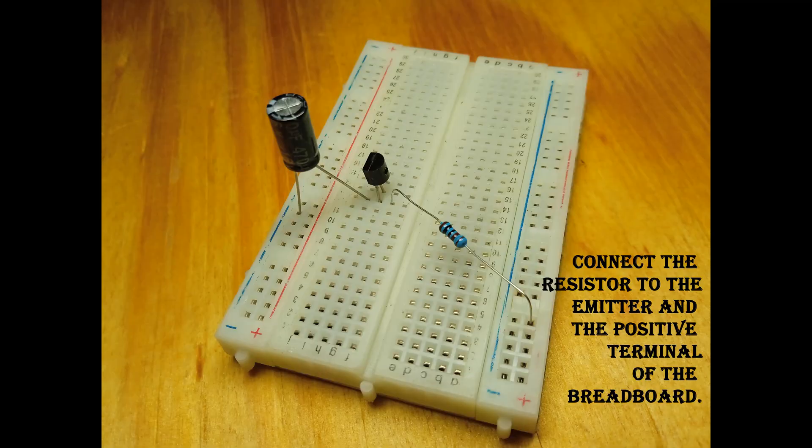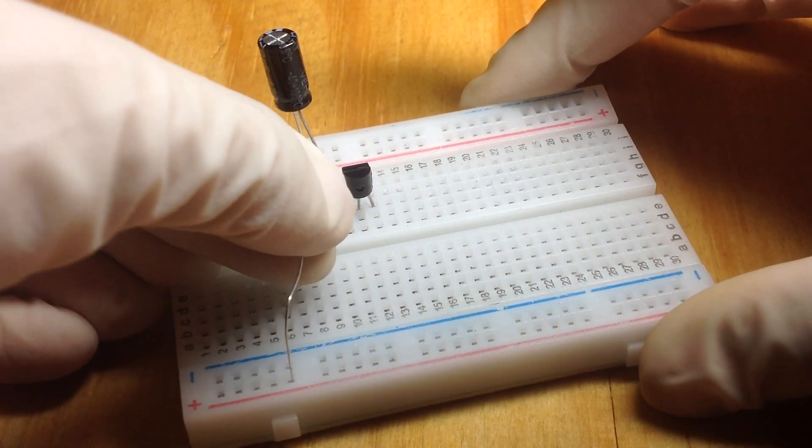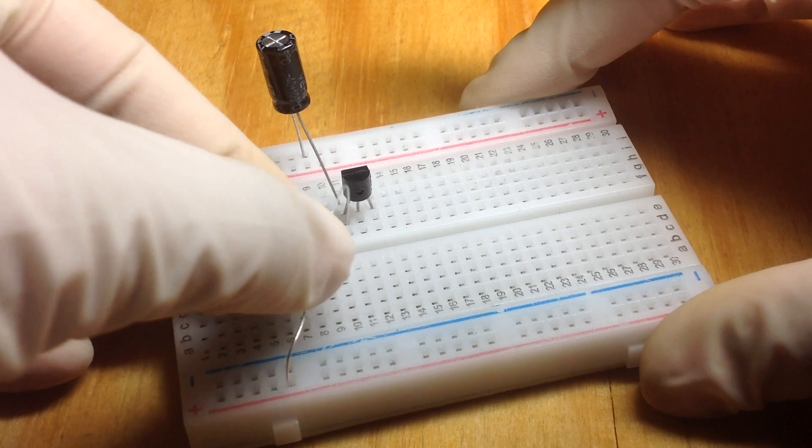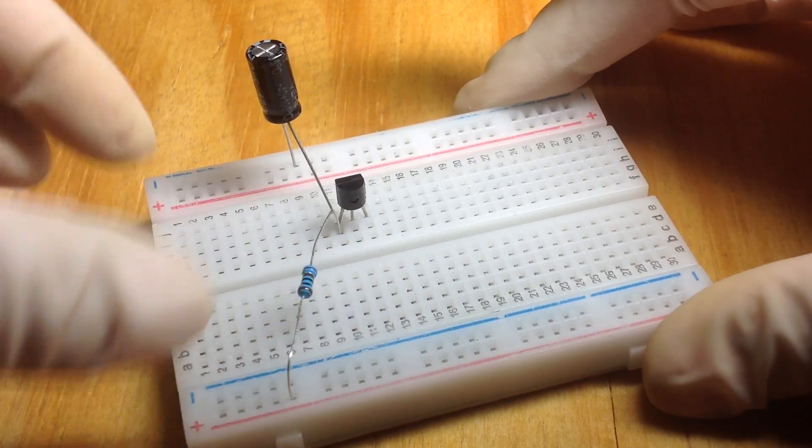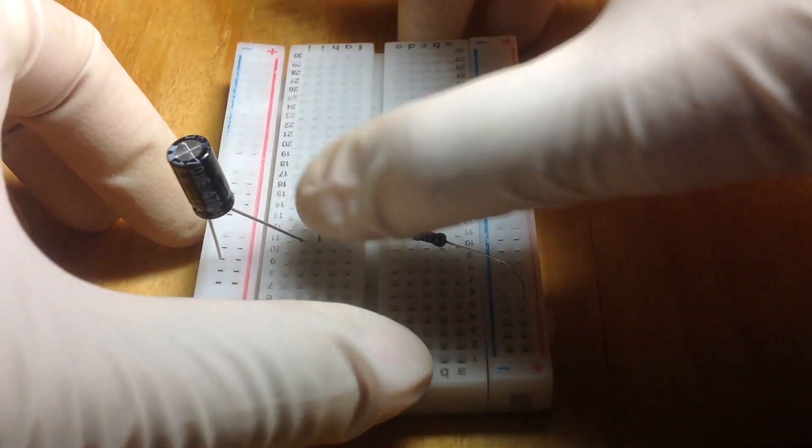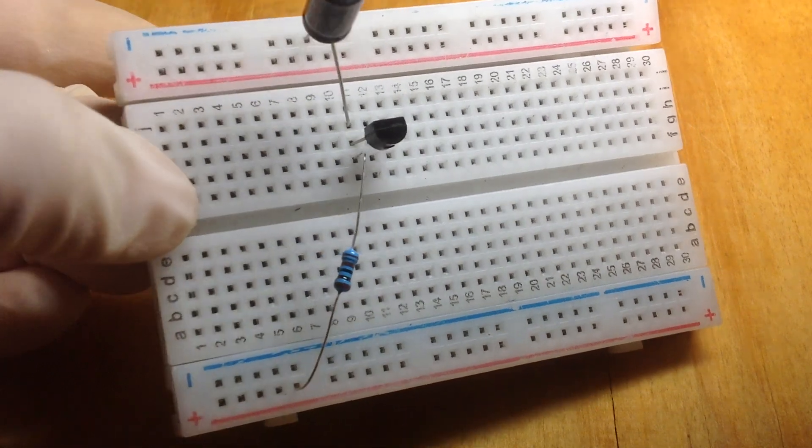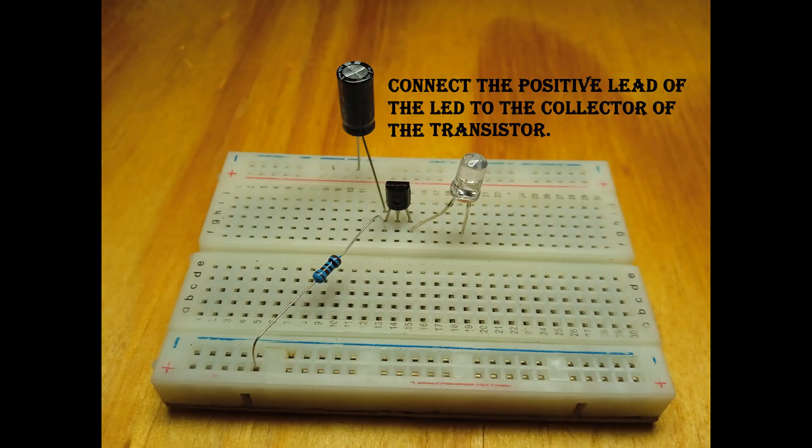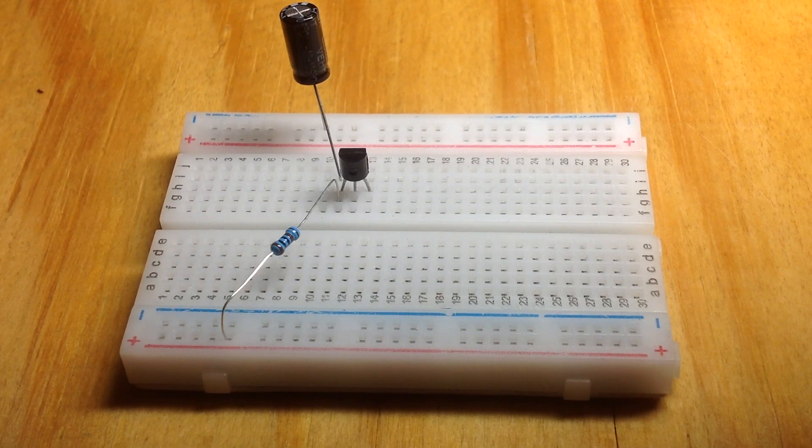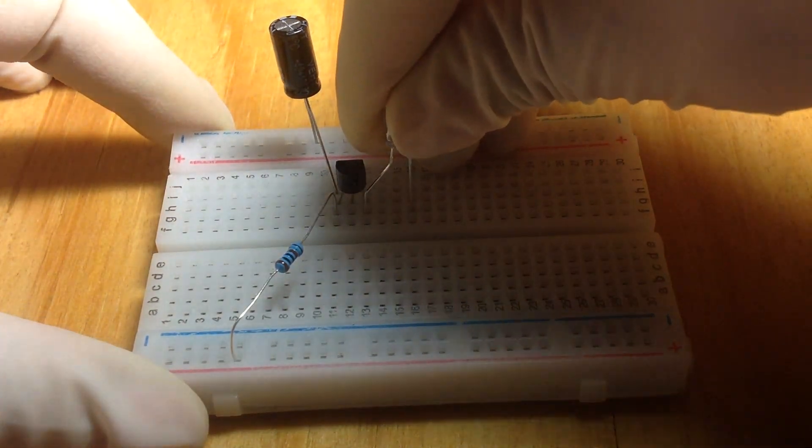Connect your 1K resistor to the emitter of the transistor and the positive terminal of the LED to the collector of the transistor.